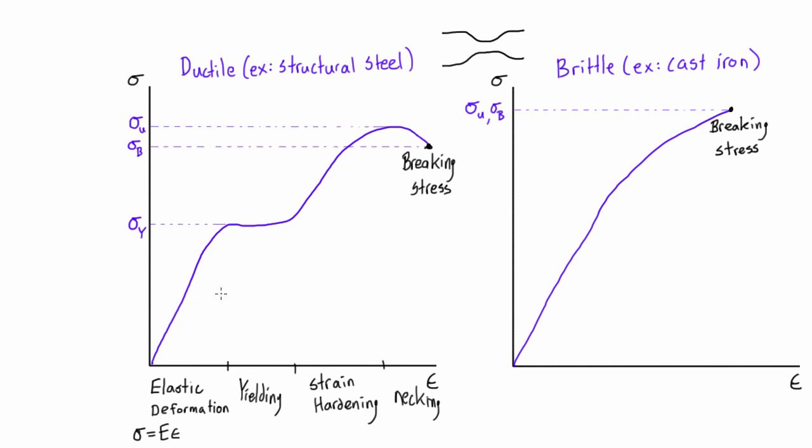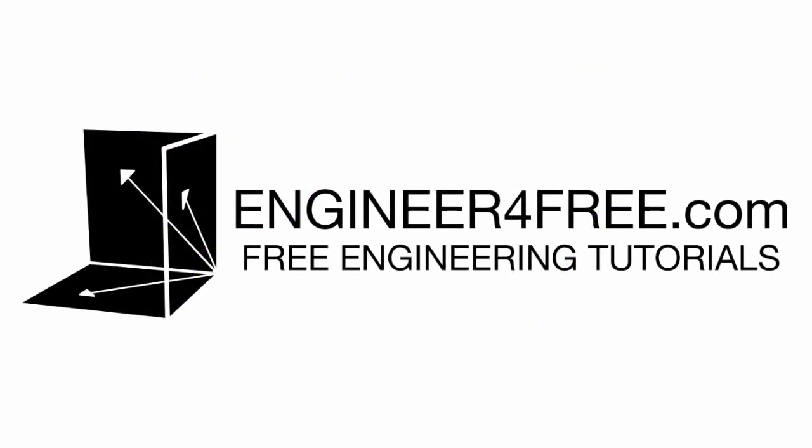I hope that explanation helped you guys. It can be really frustrating if you don't understand what are the dependent and independent variables in these graphs and where they come from and how they work. But I hope that this explanation really helped, and now we can move on with the rest of mechanics of materials.